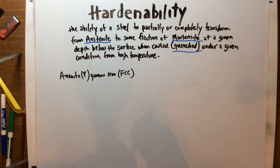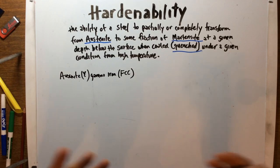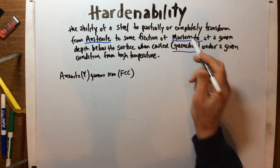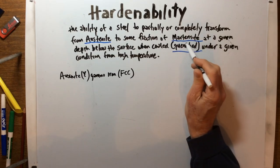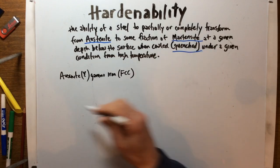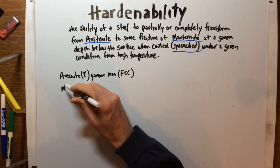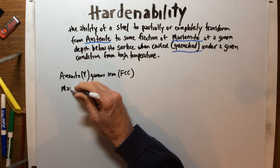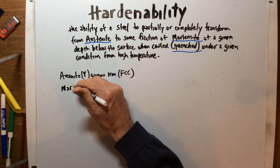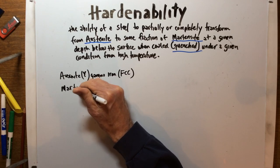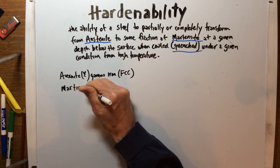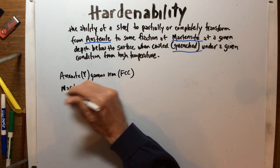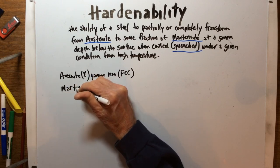What we're trying to do is retain as much of that carbon in the product before it diffuses out. If we're able to do that, it's going to turn into something we call martensite — and we saw this when looking at the IT diagrams, the time-temperature transformation diagrams.